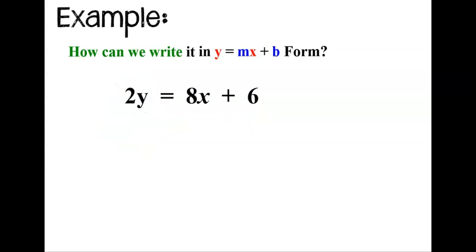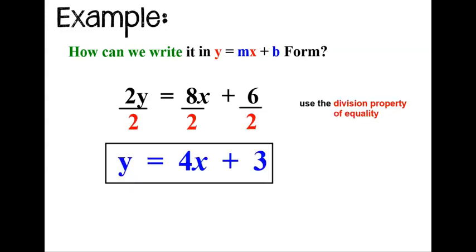So what we're going to do here is we're going to use the division property of equality, because 2 is multiplying at y, and the opposite of multiplying is dividing. So we're going to use the division property of equality here, and when we divide, we have to divide every single term. Not once on the left and once on the right, but every single term. And once I divide, I will have my slope-intercept equation.